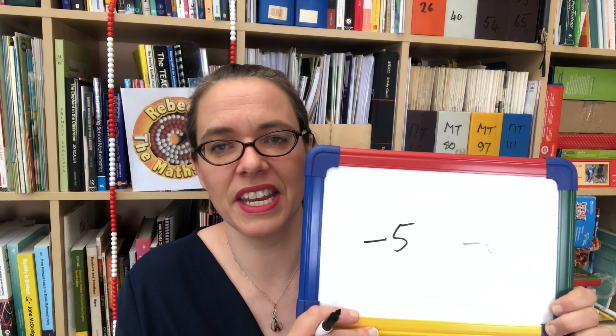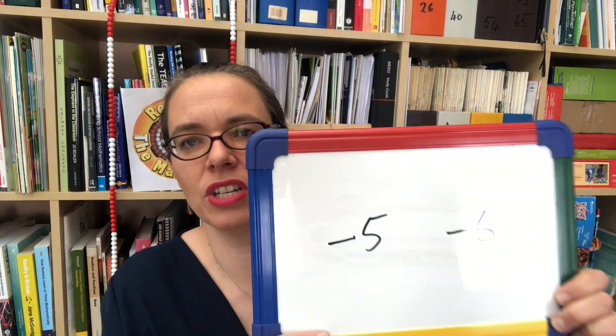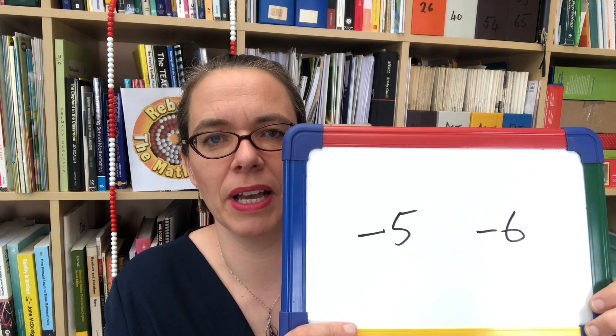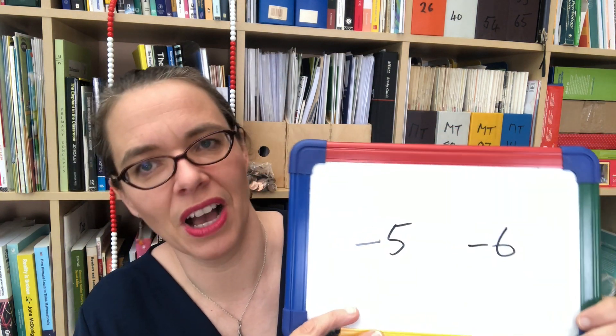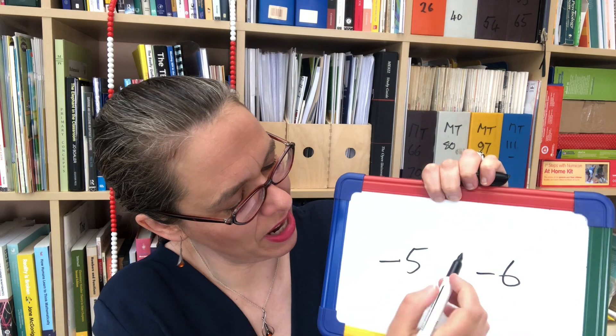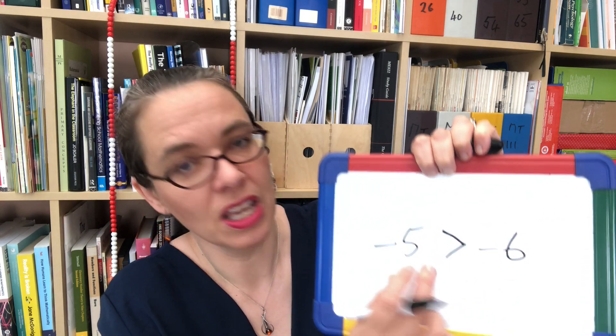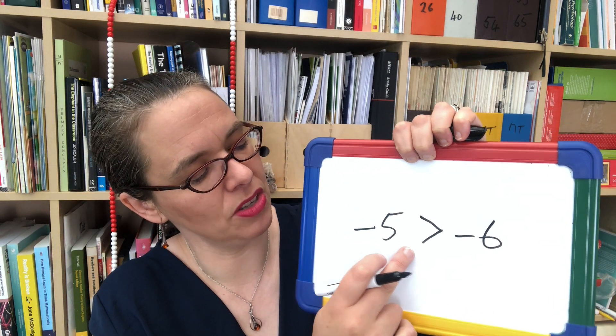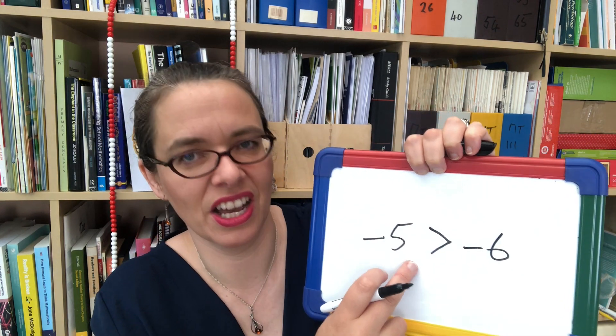One more thing to look at before the extension activities: children need to be able to compare negative numbers. If we compare negative 5 and negative 6, they need to know which of those numbers is the larger number — and of course it's negative 5. We can use that to practise our work with these symbols, where the larger end of the symbol goes next to the larger number.